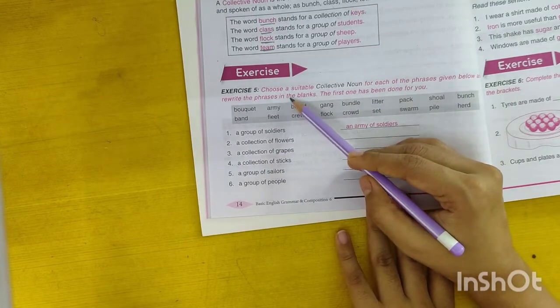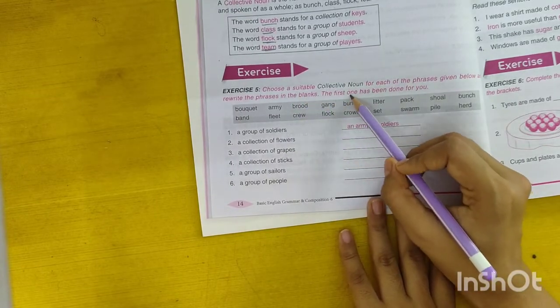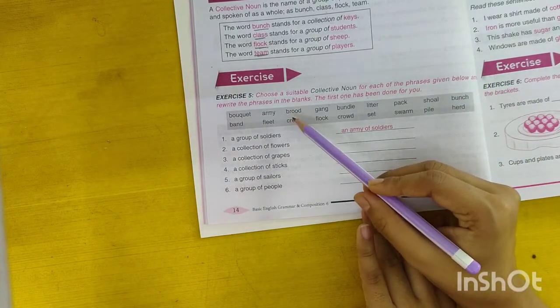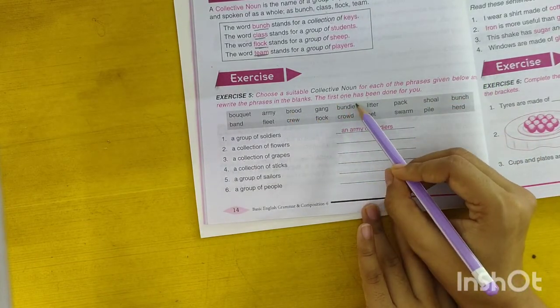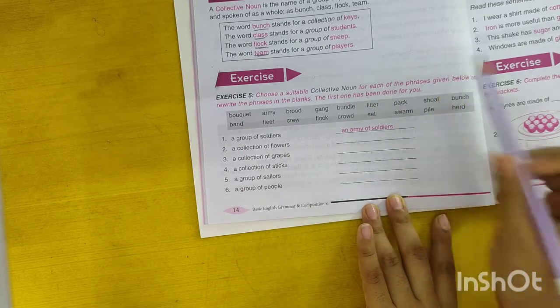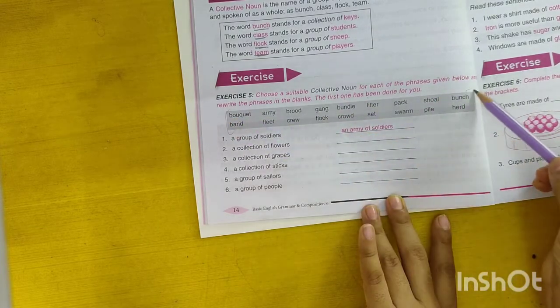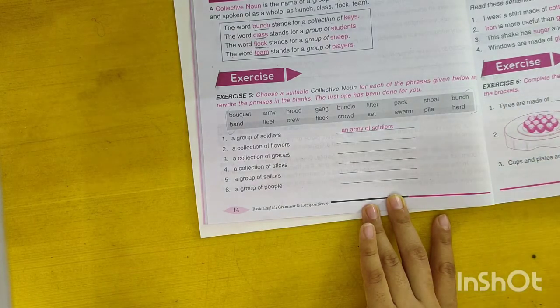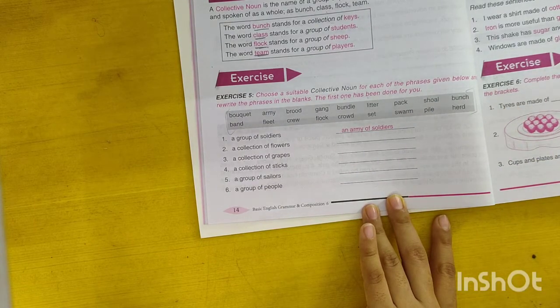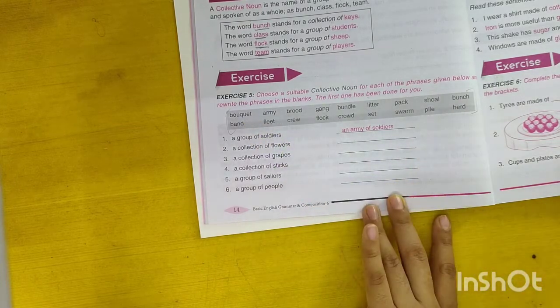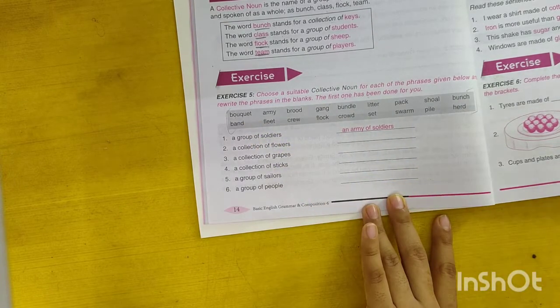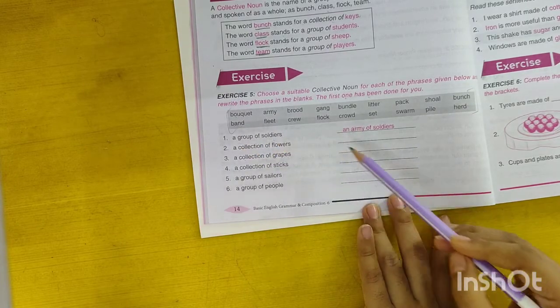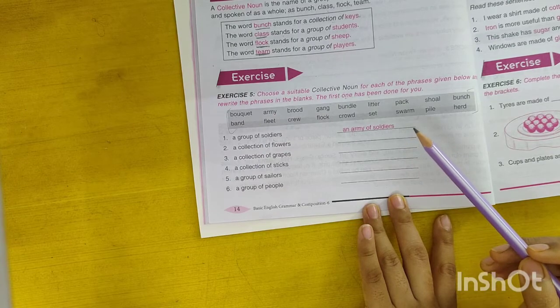Now choose a suitable collective noun for each of the phrases given below and rewrite the phrases in the blank. The first one has been done for you. For example, a group of soldiers, an army of soldiers.